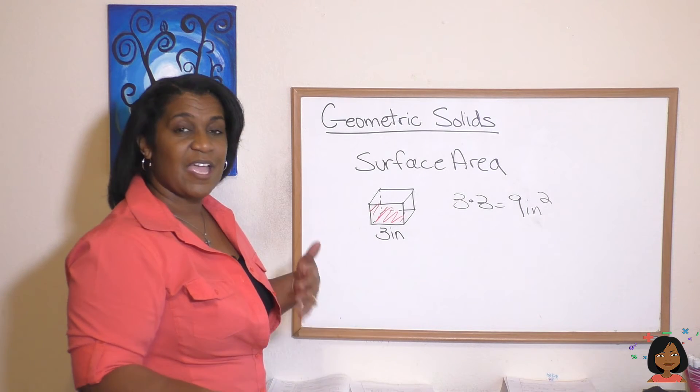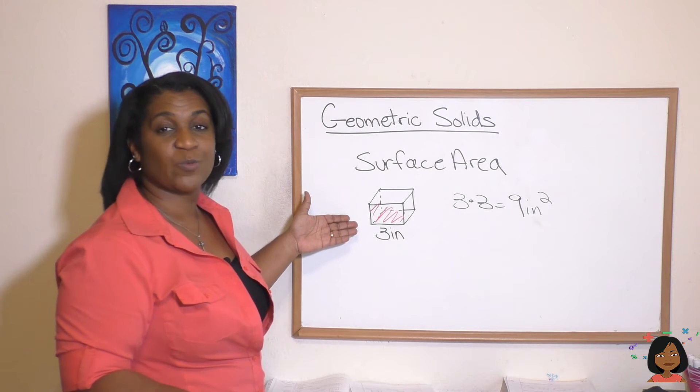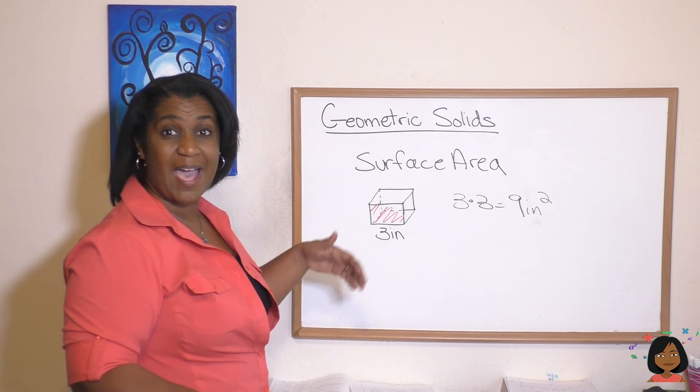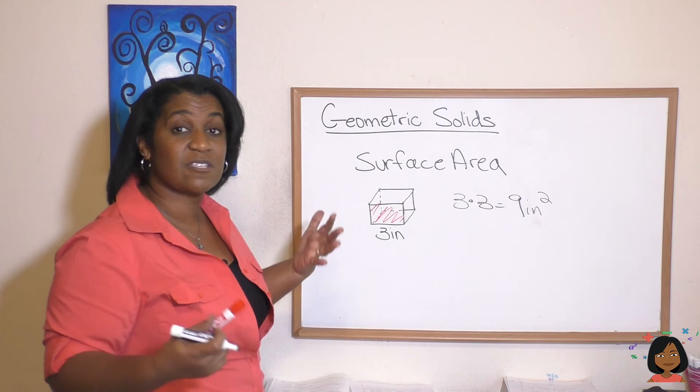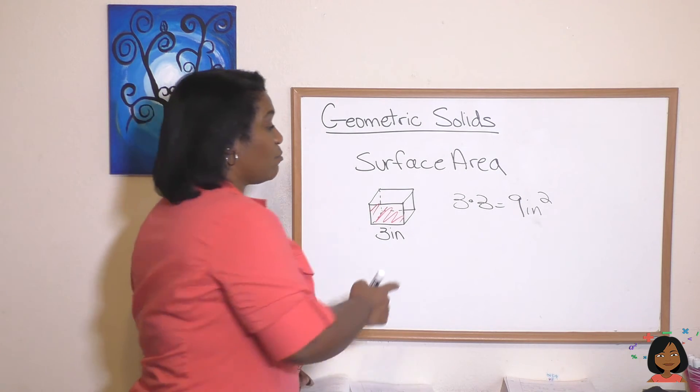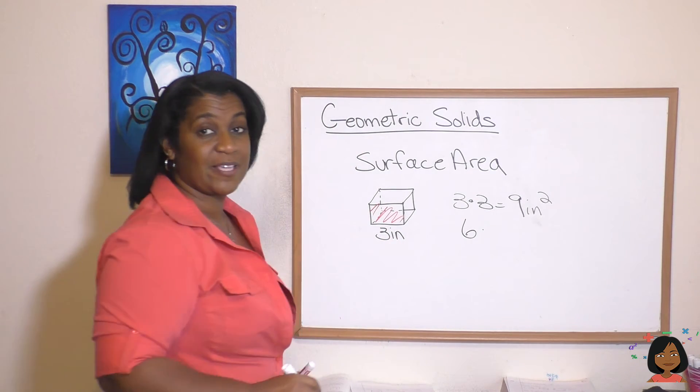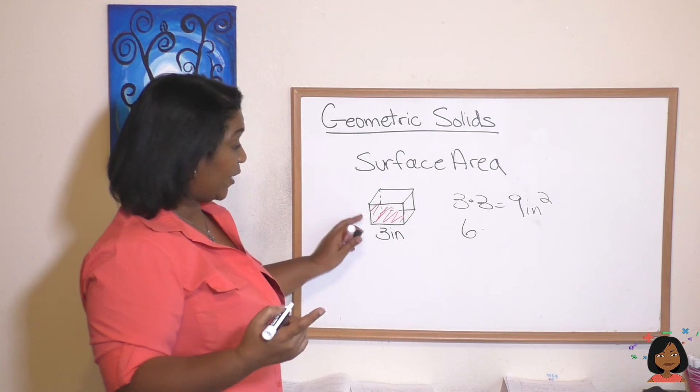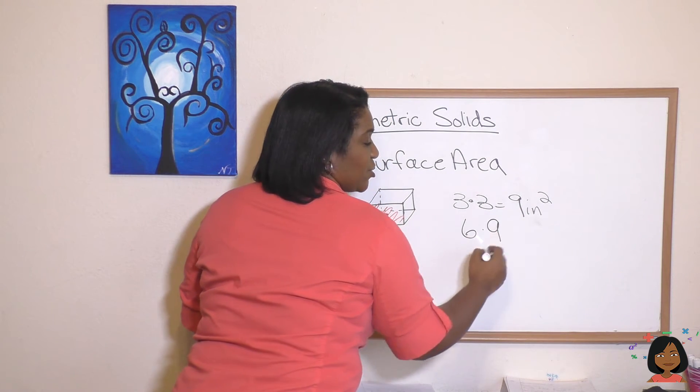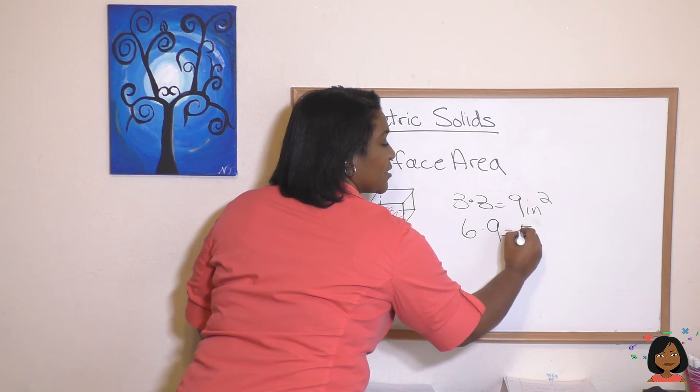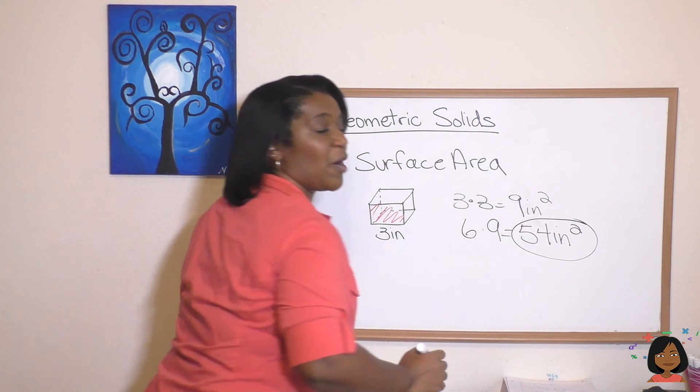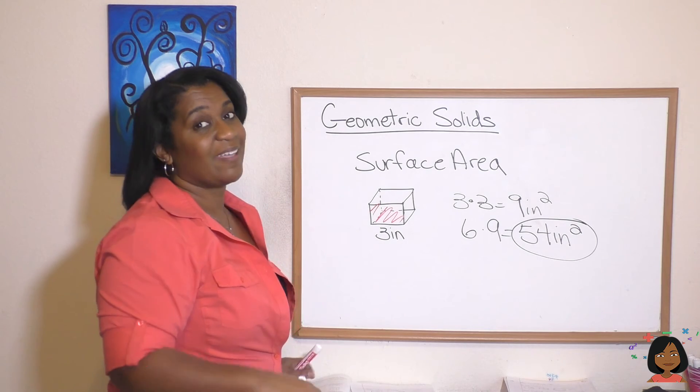So when we talk about surface area, we're talking about what is the area of all of the surfaces. Well, essentially we're talking about all of the faces. And you remember how many faces did we have to our cube? Well, we had one on the front, one on the back, and then one on each side, which adds up to a total of six faces. So to find the surface area we are going to multiply six, which is our number of faces, times the area of one square, which is nine. Nine times six is fifty-four inches, and it's still going to be squared as our label.